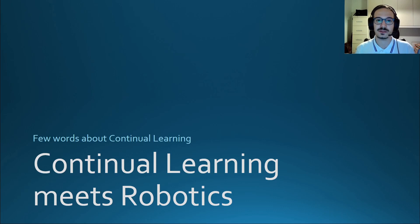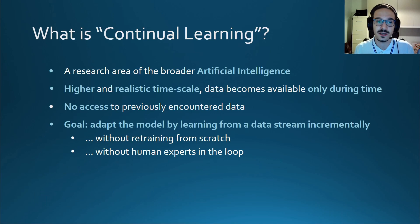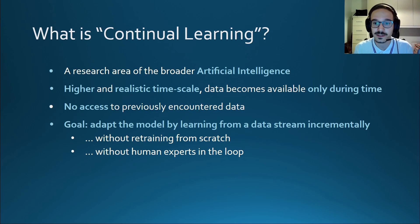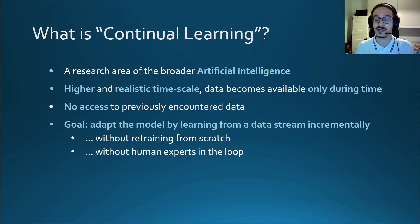Many of you may already know what continual learning is about, but I think it's better if I spend a few words about it and on why continual learning is so important for robotic devices. Continual learning is a research area of the broader artificial intelligence field, and in particular is a branch of machine learning that has strong connections to neuroscience. The goal of continual learning is to allow intelligent systems to autonomously adapt their internal knowledge by incrementally learning from new experiences in a way similar to biological systems — learning autonomously without retraining from scratch and without the need of a human expert guiding the training.